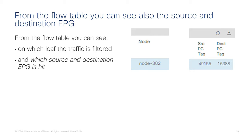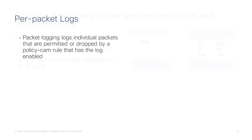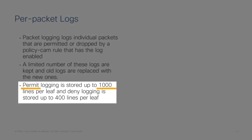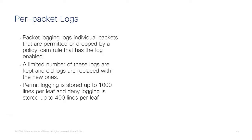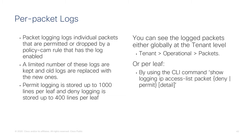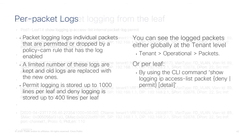It's a very nice way to check what is happening. Remember that the flow log is not a replacement for NetFlow — these are not accurate statistics, just statistics of what is being sent to the CPU. Per-packet logs log individual packets, storing up to 1000 lines per leaf. You see the latest packets, not all of them. You can check them from the tenant view or use the CLI command directly on the leaf — another way to troubleshoot traffic.